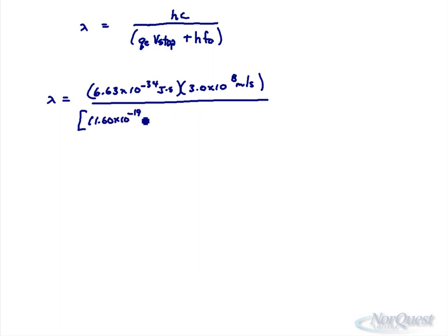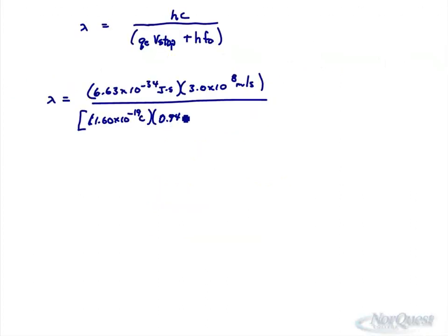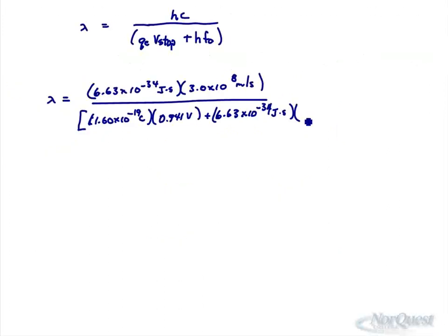So wavelength equals 6.63 × 10⁻³⁴ joule seconds times 3.0 × 10⁸ meters per second divided by 1.60 × 10⁻¹⁹ coulombs times the stopping voltage 0.941 volts plus 6.63 × 10⁻³⁴ joule seconds times the threshold frequency 4.27 × 10¹⁴ hertz. Lots of numbers.